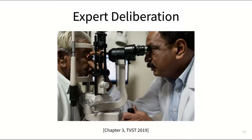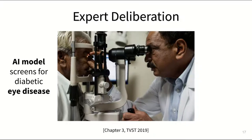Diabetic eye disease is actually the leading cause of blindness among working-age adults worldwide. And once you turn blind from it, your vision loss cannot be reversed. But if you're diagnosed early and treated appropriately, you can keep your eyesight.